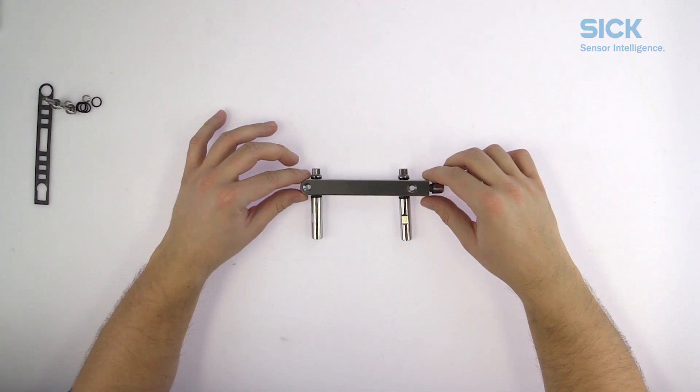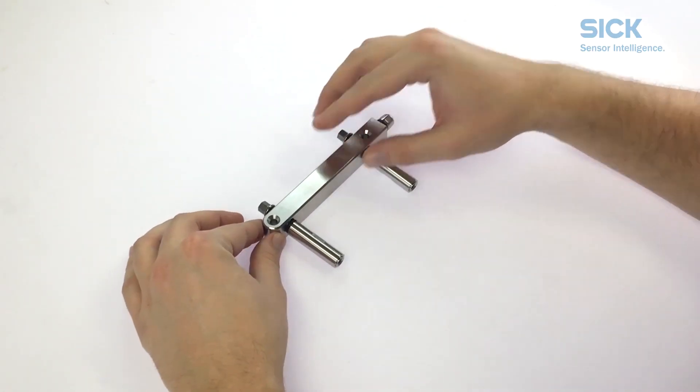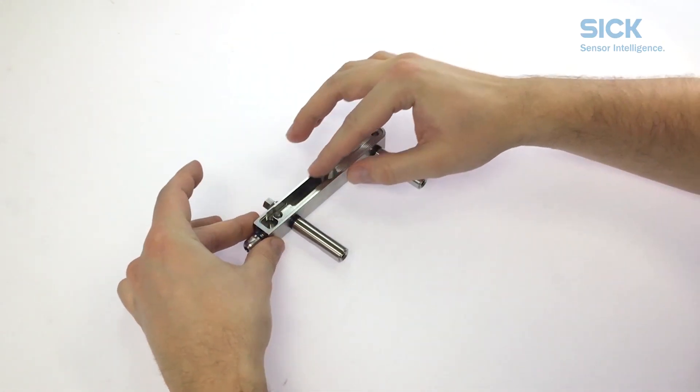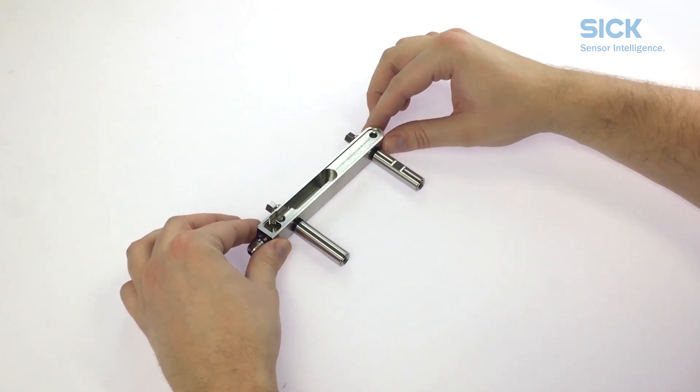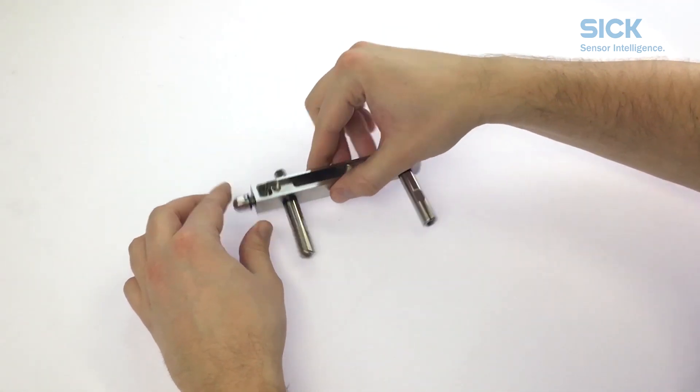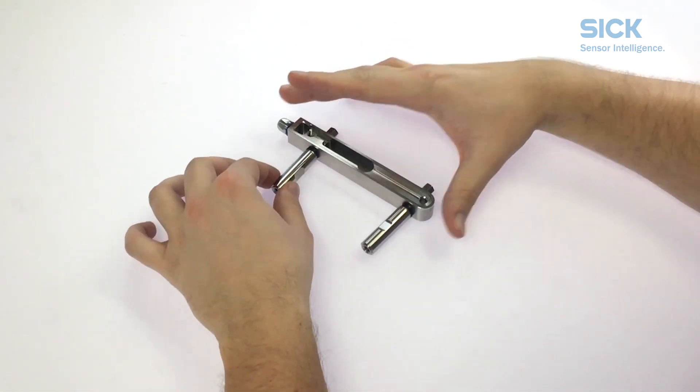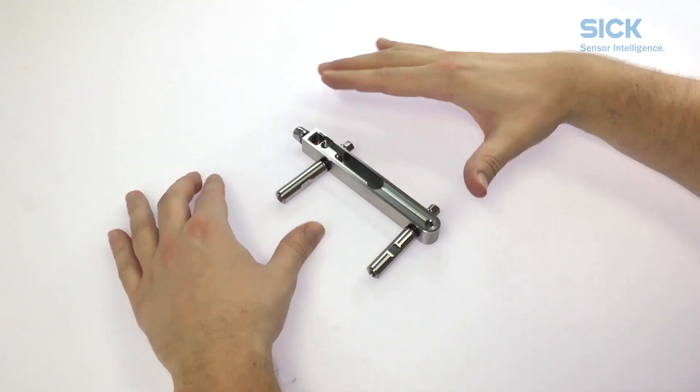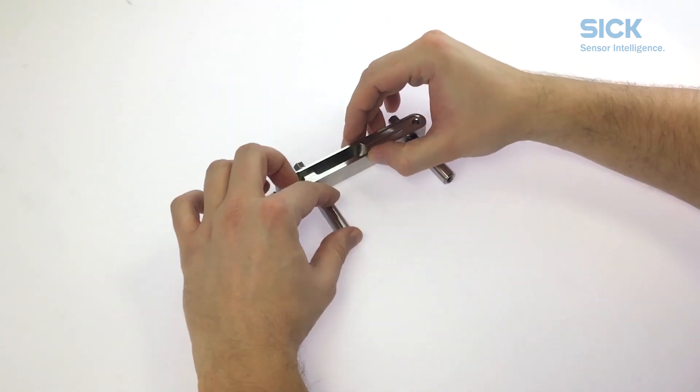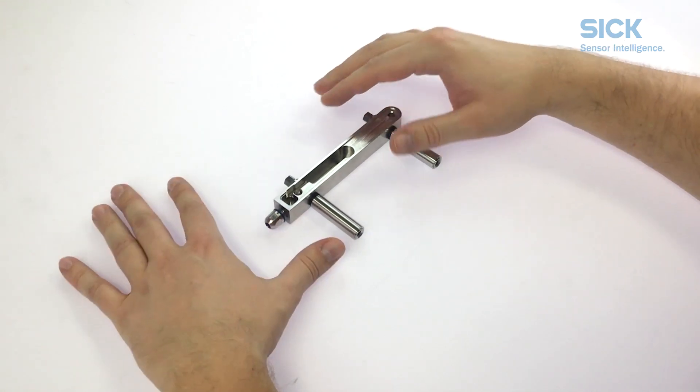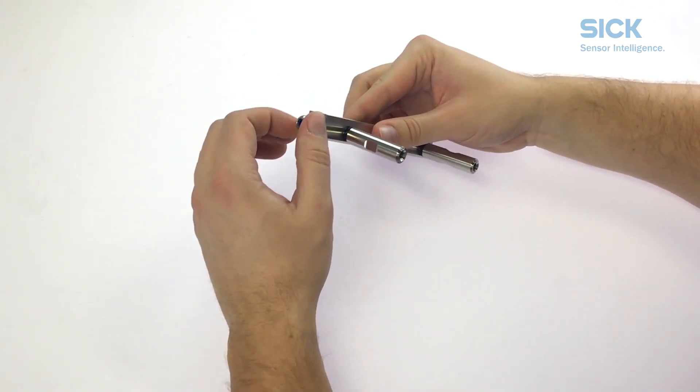Now let's take a look at the bracket itself. It consists of the bracket base where eventually the cable will run through. It comes with a pair of spacers that will hold the mounted Twinox 4 to the desired position at the machine and the cable gland to tighten the cable to the bracket base.